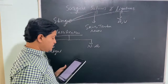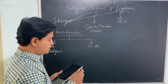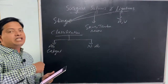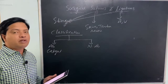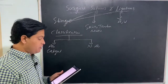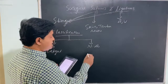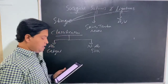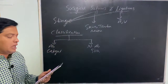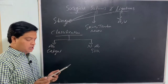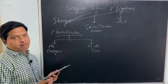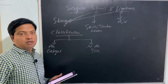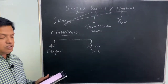Non-absorbable sutures are not digested — they need to be removed from the wound once the wound is cured. Examples include silk, cotton, linen, nylon, or metals. These are the different types of non-absorbable sutures.